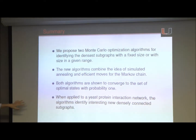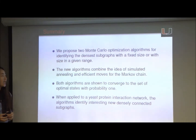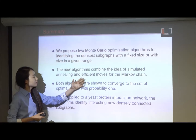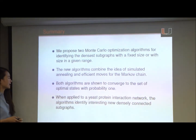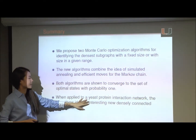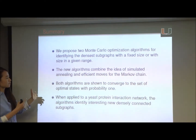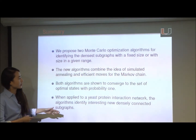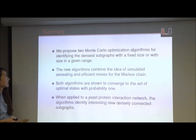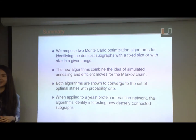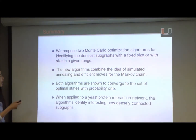To summarize, in this work we proposed two Monte Carlo algorithms to identify dense subgraphs — either with a fixed size or with sizes in a given range. The algorithms combine the idea of simulated annealing with efficient local and global moves. Both algorithms are shown theoretically to converge to optimal sites. We applied this to a yeast protein interaction network and compared with Spirin and Mirny's work, finding something more densely connected. We also demonstrated the effectiveness of the method on stock market data and showed evidence for the globalization hypothesis.